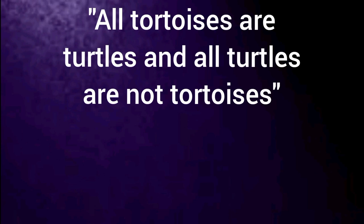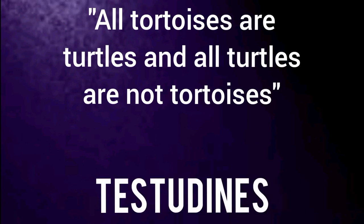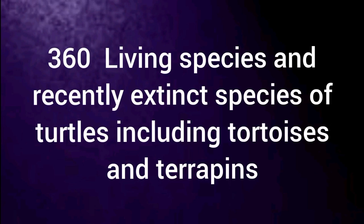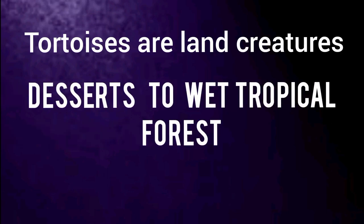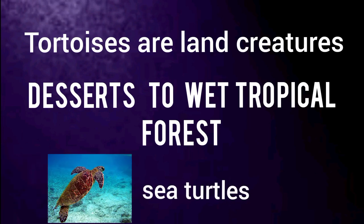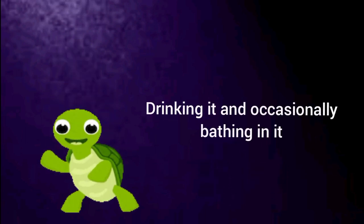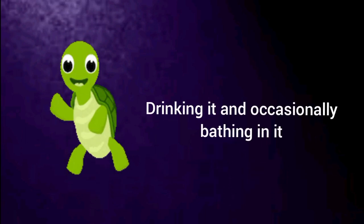Both of them belong to an order of reptiles known as Testudines. There are almost 360 living and recently extinct species of turtles including tortoises and terrapins. Tortoises are exclusively land creatures living in a variety of habitats from deserts to wet tropical forests, different from sea turtles which take to land only when they are laying eggs. Tortoises don't have much to do with water other than drinking it and occasionally bathing in it.